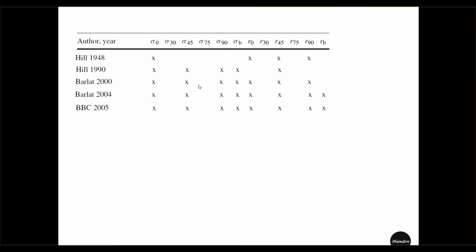These yield points can be directly found from the stress-strain curve by identifying the point where initial yielding starts in each stress-strain curve for each orientation: 0, 45, 90, and biaxial.